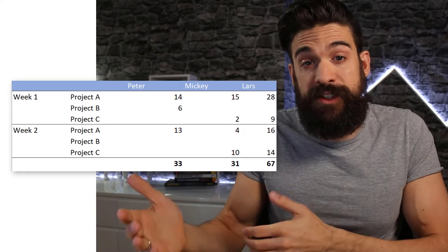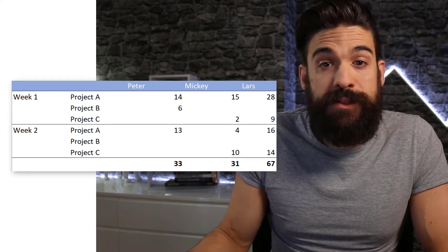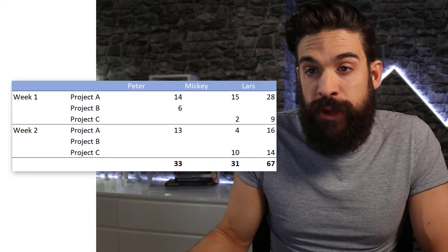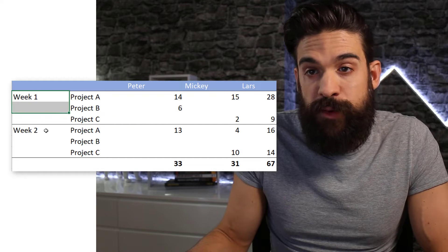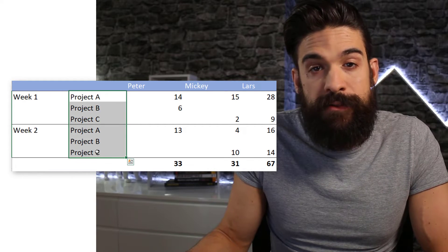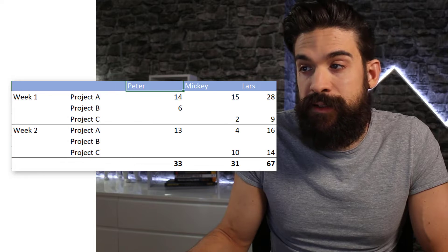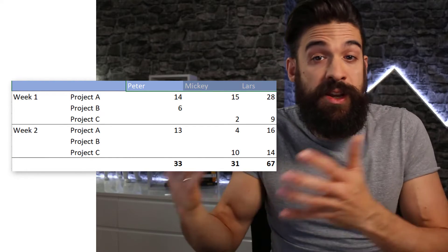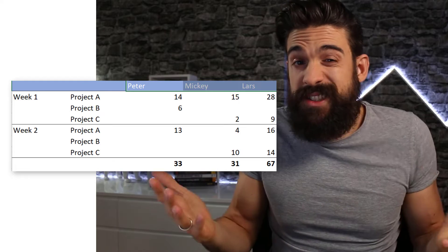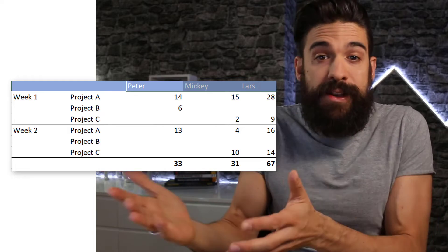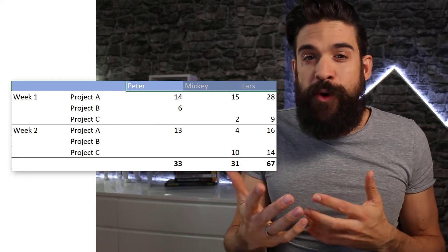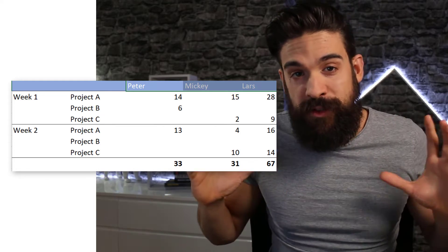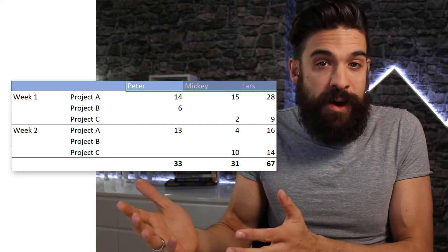Let's start by having a closer look at the data for this challenge, which is our tracking sheet for different projects by employee and week. On the left hand side we have the weeks, then we have the projects, and at the top we see all the different employees. Every week this sheet is filled out, which is nice for the person that fills it out, but we have to transform it if we want to analyze it further inside of Power BI.